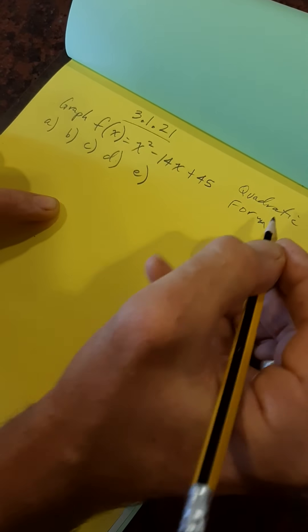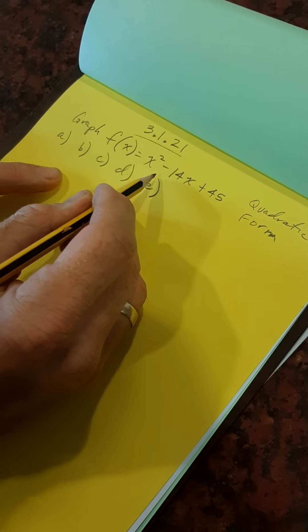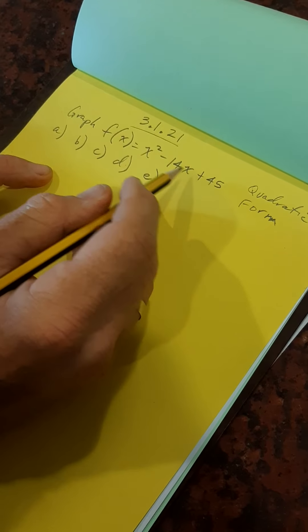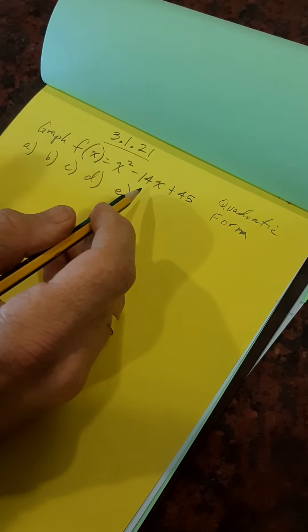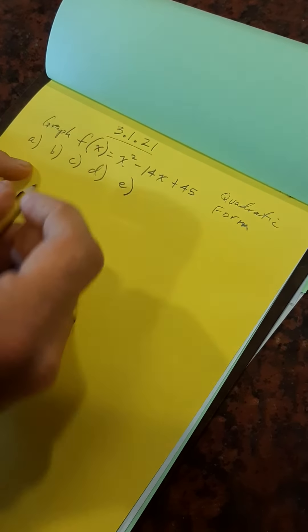And we know that vertex form is the one that's easy to graph. So we need to change this to vertex form. Back to Mr. Thomas. Completing the square.